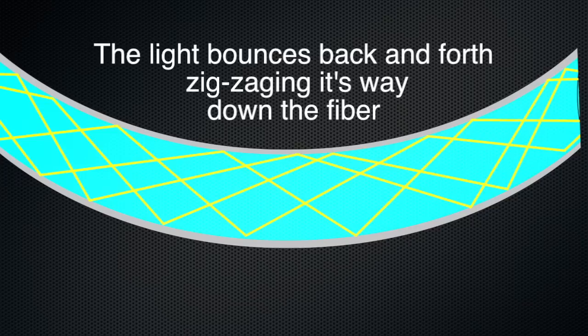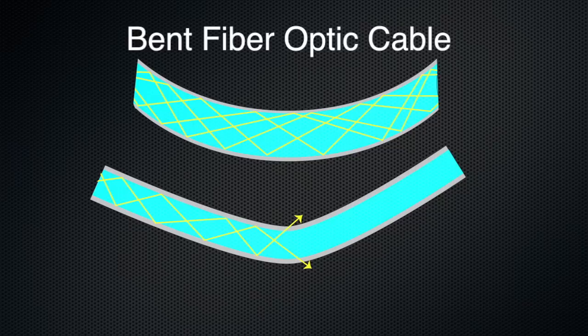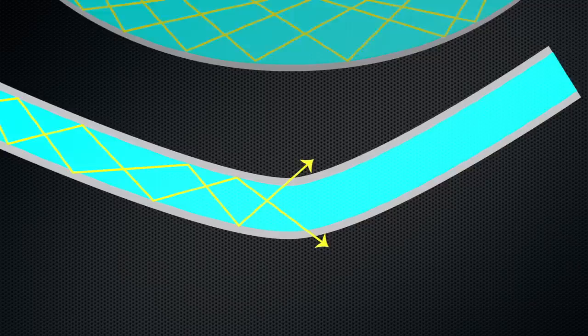The sharper the curve of a fiber optic cable, the more reflections occur as the light bounces from side to side within the fiber optic core. But if the angle is too great, say from a fiber optic cable that is bent too far, some or all of the light will escape into the buffer, attenuating the light signal.